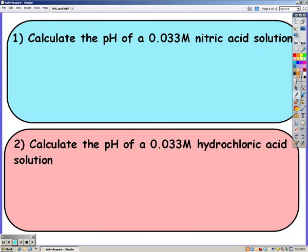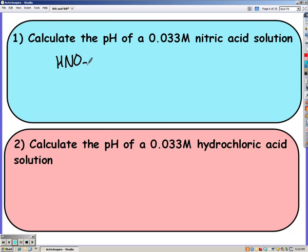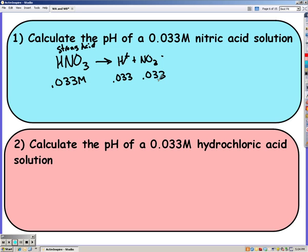We can calculate the pH of strong acids and bases knowing that they break up 100%. So we have 0.033 molarity of nitric acid. First thing we need to do is write our dissociation equation, how it breaks apart. Since it's a strong acid, I know it's going to break up into hydrogen and nitrate ion. And because it's strong, if I have 0.033 molarity of nitric acid, due to it being a one-to-one ratio, I also have 0.033 molarity hydrogen and nitrate ion.